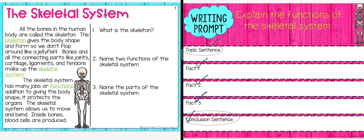The skeletal system has many jobs or functions. In addition to giving the body shape, it protects the organs. The skeletal system allows us to move and bend. Inside bones, blood cells are produced.